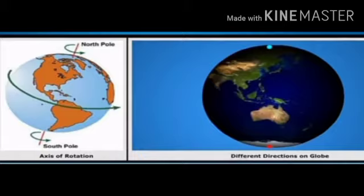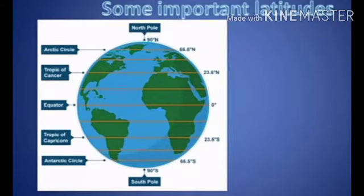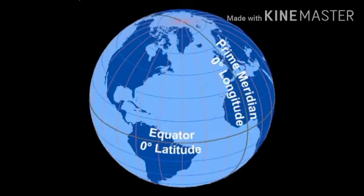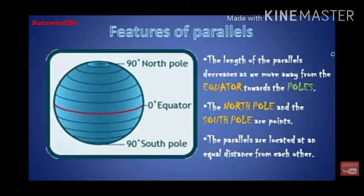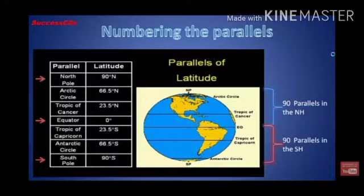If we look at the globe carefully, we see a line that runs exactly in the middle of it, dividing the globe into two equal halves. This line is called the equator. The equator is considered to be at zero degrees.